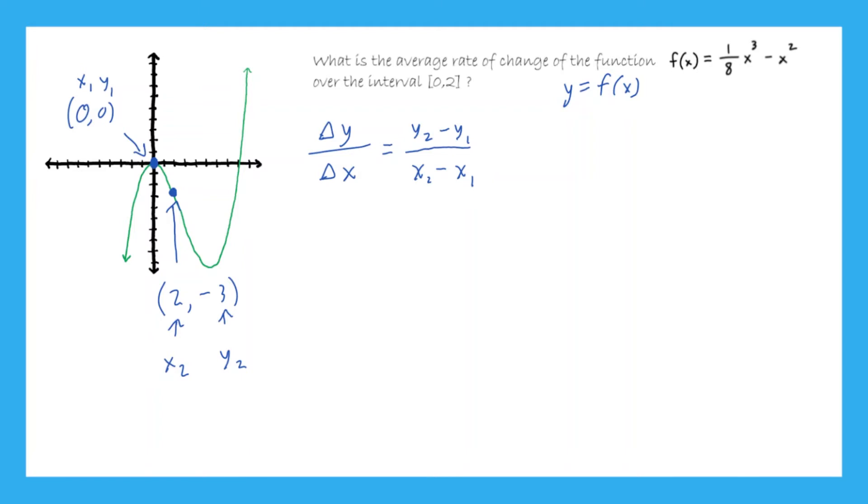So if we had a graph, once again, we could easily just plug in 0, this x1, would go right there. And this 0, y1 would go right there. And then this 2 as x2 would go right there. And this negative 3 would go right there. And then we would just plug in those four values and simplify. And then we would get negative 3 over 2 for that slope. But we need to figure out how to get those numbers without using the graph.